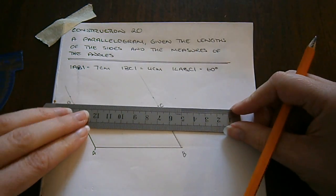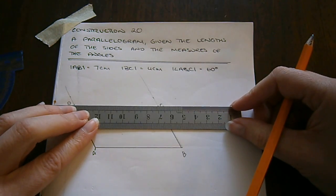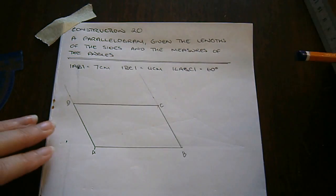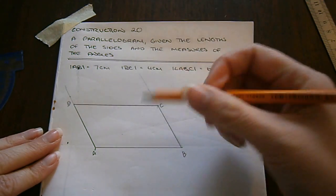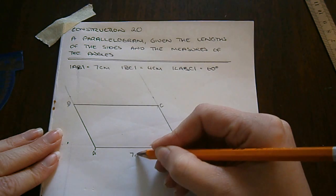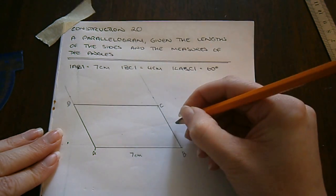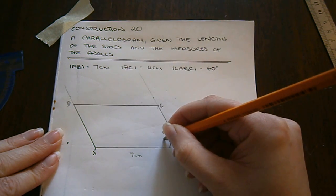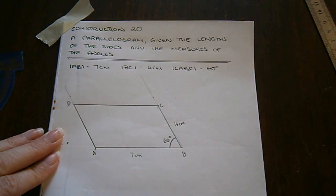I join C to D with my ruler, and here I have my parallelogram ABCD. I mark each of the lengths: AB is 7cm, BC is 4cm, and the angle ABC is 60 degrees. Here I am.